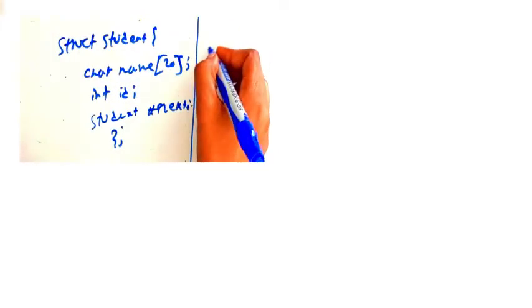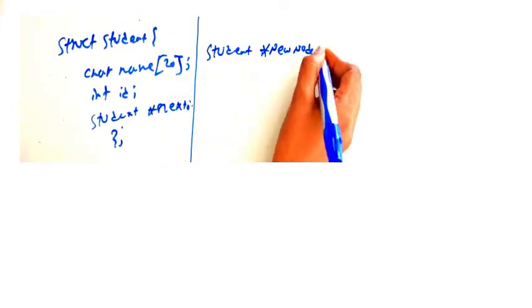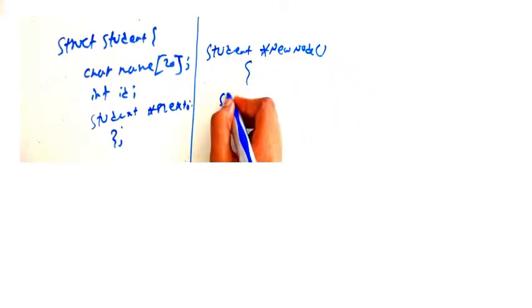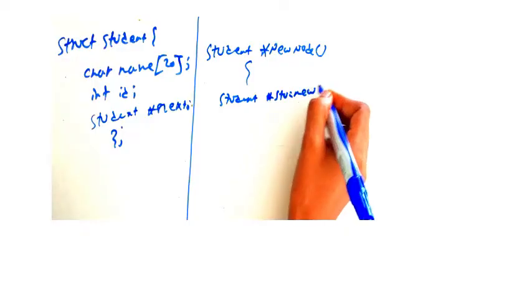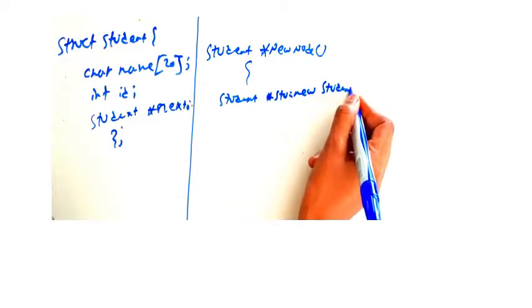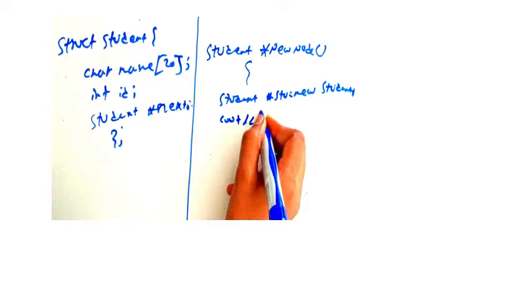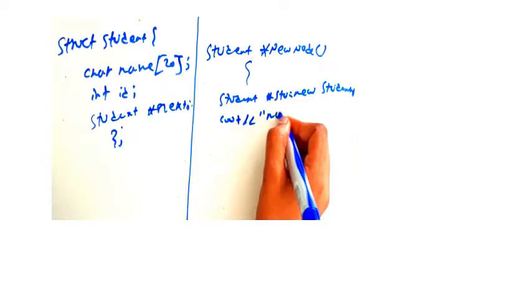So, as we are going to insert, first of all we must create a new node. We are going to learn how to create it. So let's use 'student' as the name of the new node in the function 'create'. Then, student is equal to new student. Then, cout the name of the student.